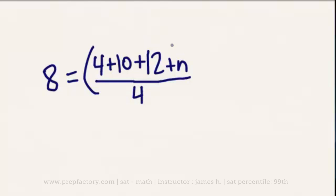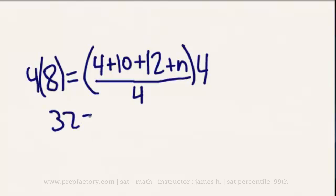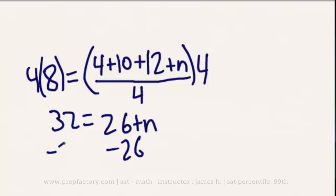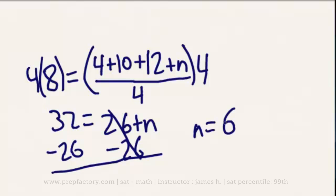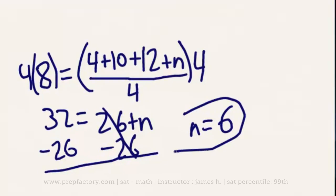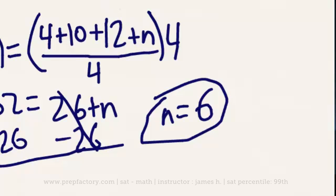Just like any other equation, we're going to deal with it the same way. First, let's get rid of that 4 by multiplying both sides, so we have 32 equals — well, 4 plus 10 is 14, and 14 plus 12 is 26 — so 32 equals 26 plus n. We simply subtract 26 from both sides, and we are left with n equals 6. The answer to our question is 6, and as you can see, average problems are not extraordinarily daunting.